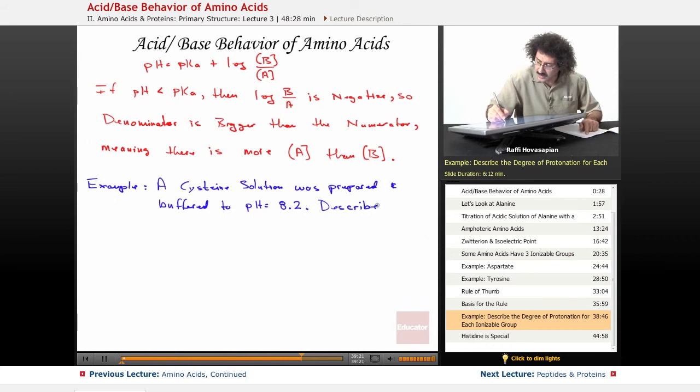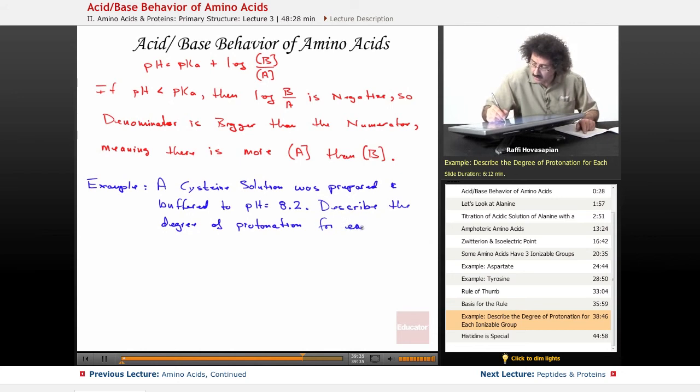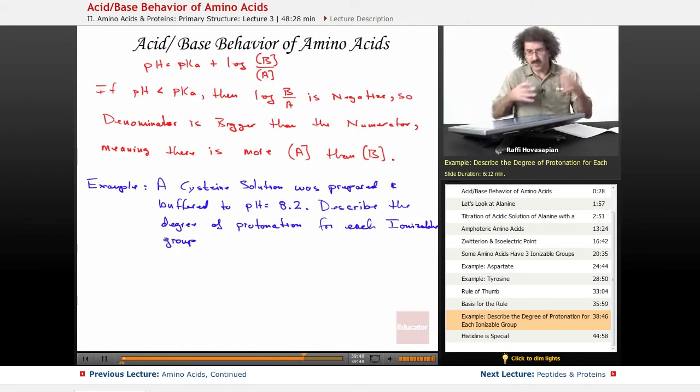I would like you to describe the degree of protonation for each ionizable group. In other words, I'd like you to tell me, does this amino acid exist in what form, what's the total charge on it, which group is ionized, which group is not ionized? That's what it's asking.